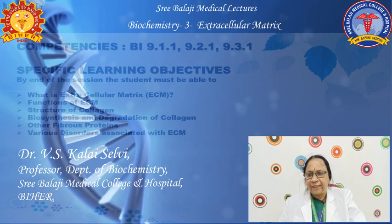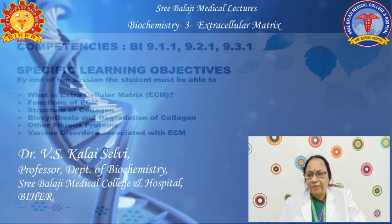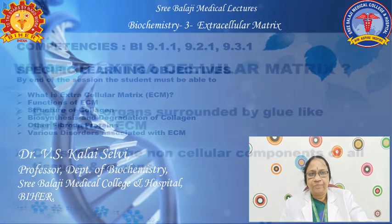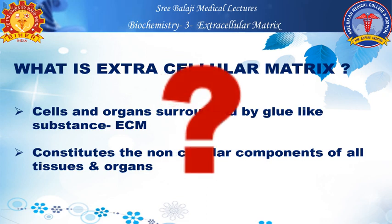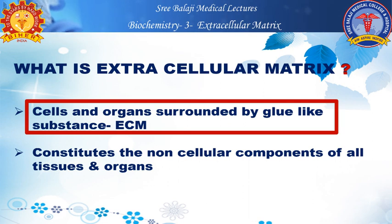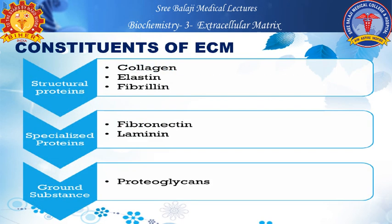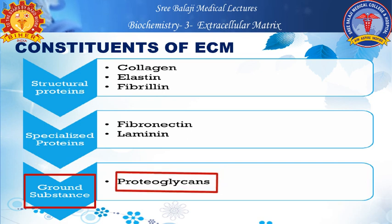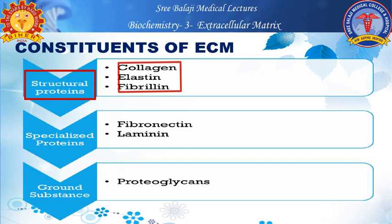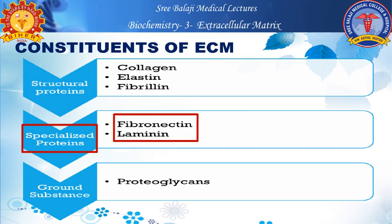We will also cover the structure, biosynthesis, and degradation of collagen and other fibrous proteins, and various disorders associated with the extracellular matrix. The extracellular matrix constitutes the non-cellular components of all tissues and organs. Its constituents include ground substance — water, proteoglycans, and structural proteins like collagen, elastin, fibrillin, and specialized proteins such as fibronectin and laminin.